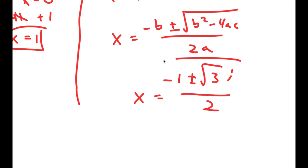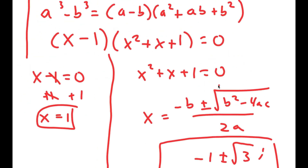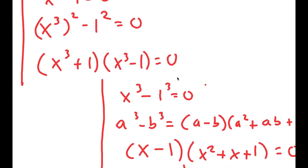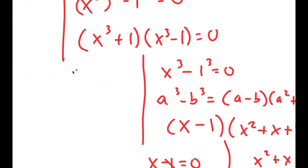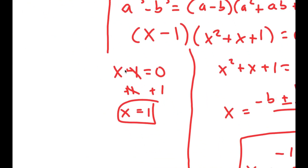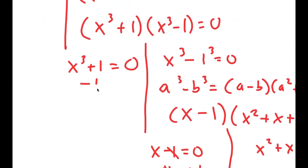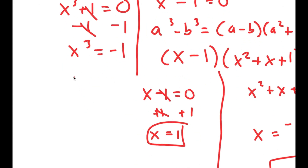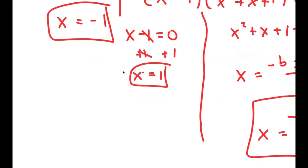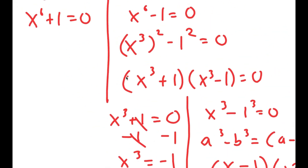Now we aren't done yet because we also have to solve the remaining equations. For x to the power of 3 plus 1 equals 0, I'm going to subtract 1 on both sides. So I get x to the power of 3 is equal to negative 1, meaning x is also equal to negative 1. So this is another solution.